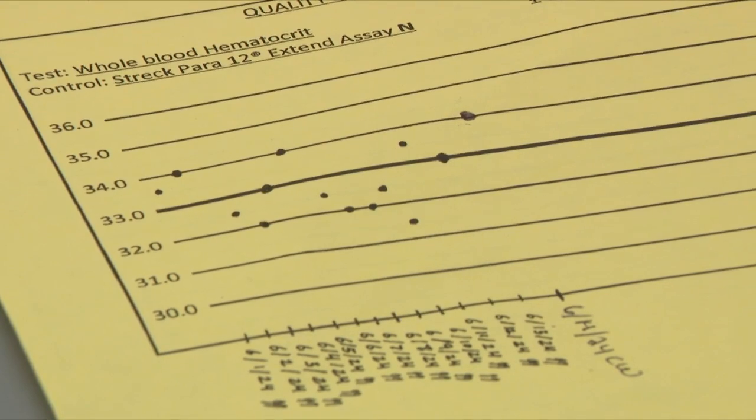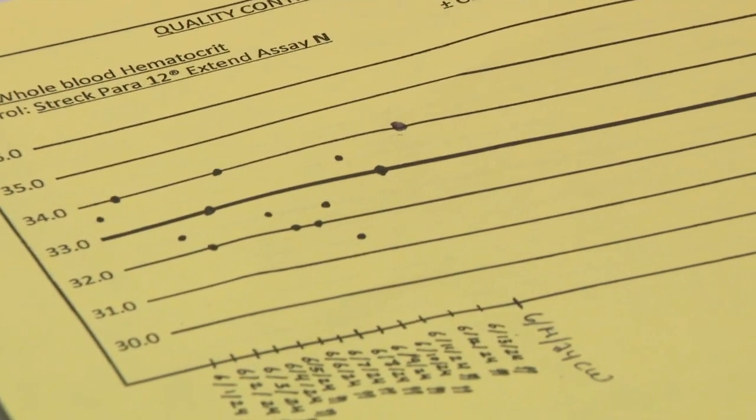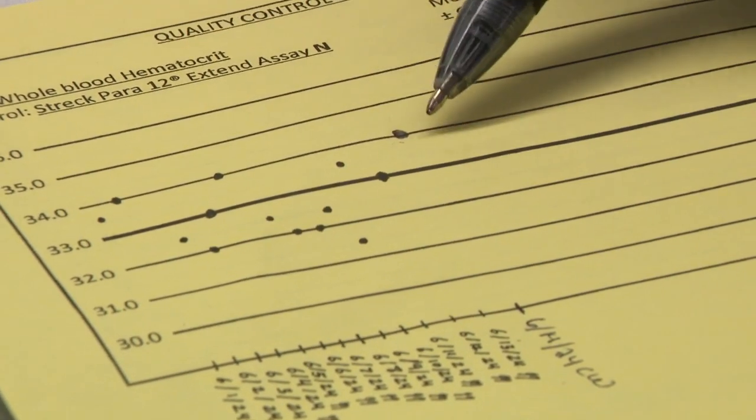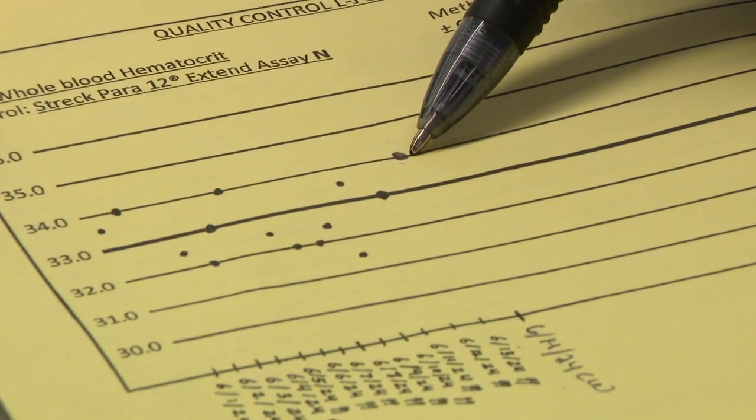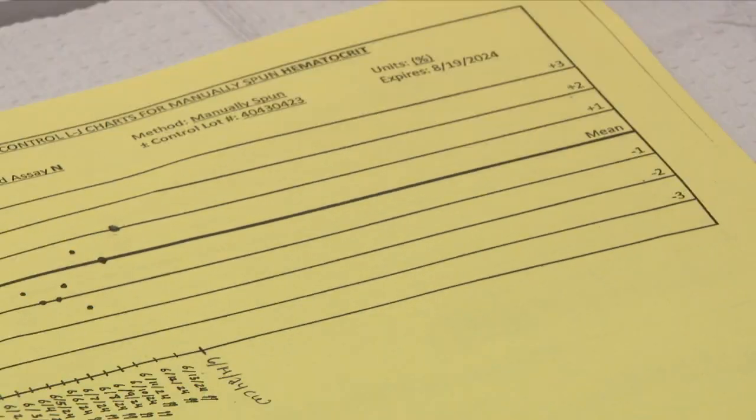Now we have to determine if our QC was acceptable overall. To do this, we're going to chart our value on the Levey-Jennings chart, which was 34 percent. And if our value is within plus or minus two standard deviations of the assayed control mean, then it is acceptable and we can report our patient sample hematocrit value.